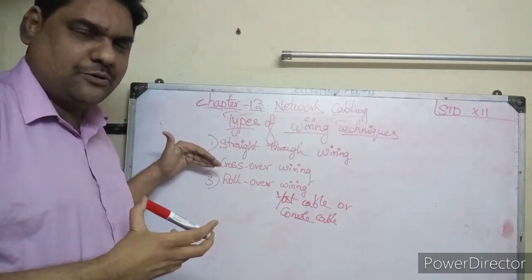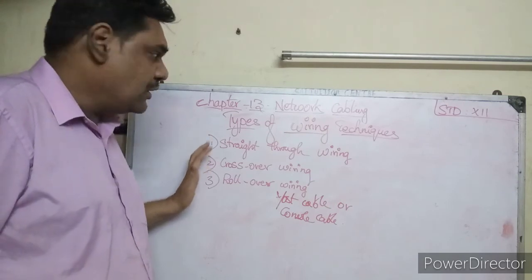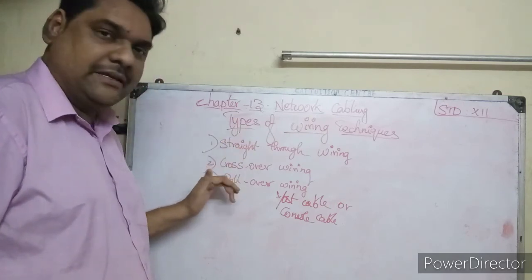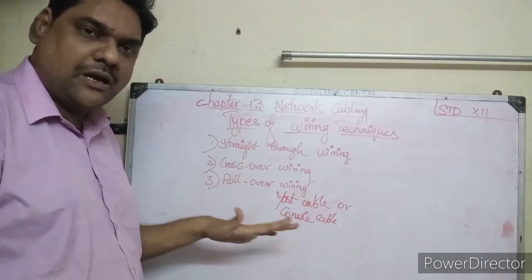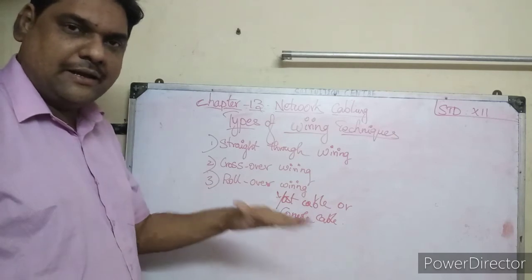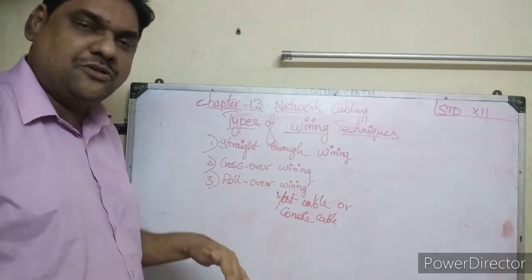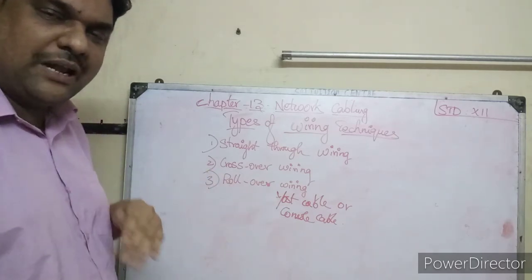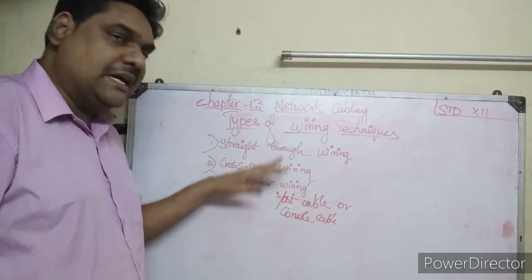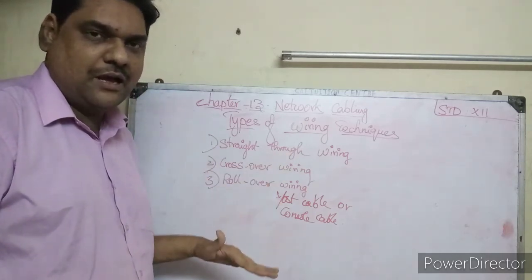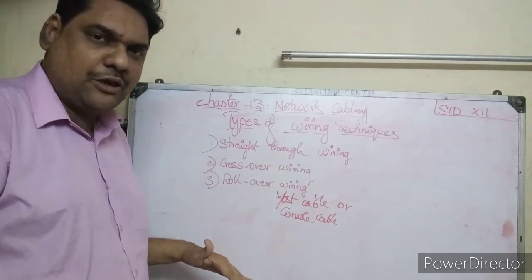So these are the three types of wiring techniques: straight-through, crossover, and rollover. This completes chapter 13 on network cabling. This knowledge is very useful if you are pursuing a career as a hardware engineer or in networking. Thank you, children.